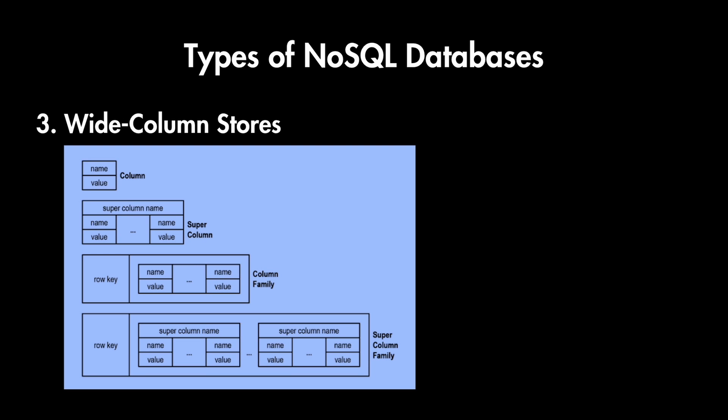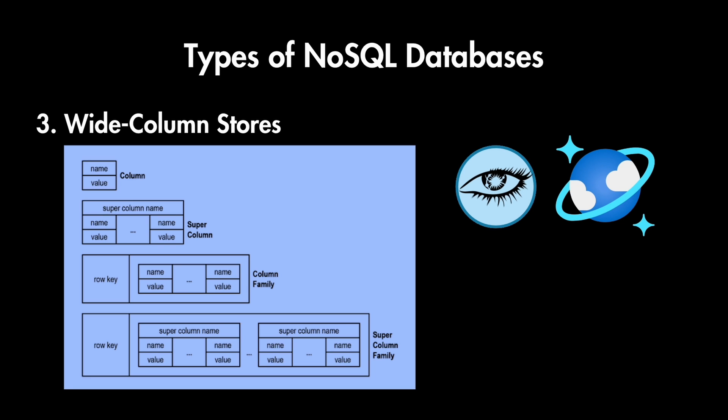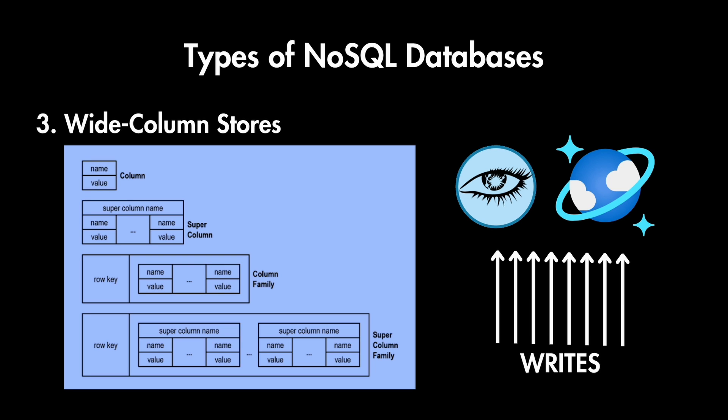The next type is wide column stores. Data is stored in tables, rows, and dynamic columns. Columns can be grouped into column families, and unlike relational databases, columns can be added on the fly, which is good for data with evolving schemas. Wide column database examples are Apache Cassandra and Azure's Cosmos DB. They can handle massive scale and are very good for lots of write operations. They are specifically designed to be distributed across hundreds of thousands of nodes, making scaling easy across many machines.